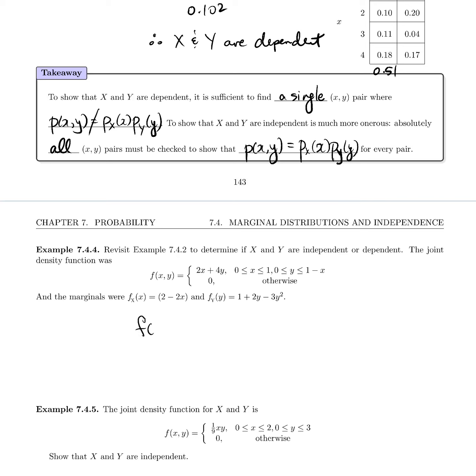Well, 2x plus 4y certainly is not equal to (2 minus 2x) times (1 plus 2y minus 3y squared), which is f_X(x) times f_Y(y). And if that is the case, well, because those two things are not equal, X and Y are again dependent. So X and Y are dependent.